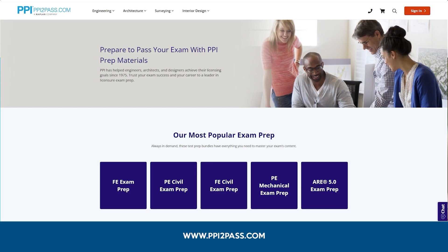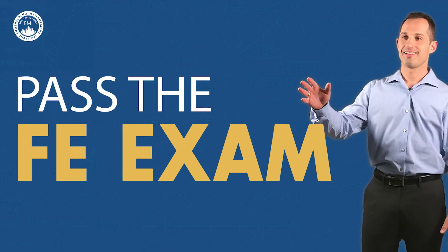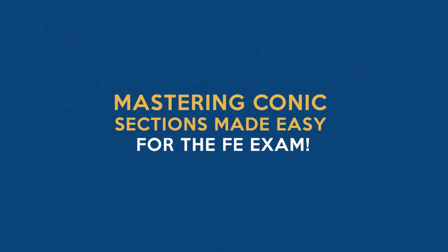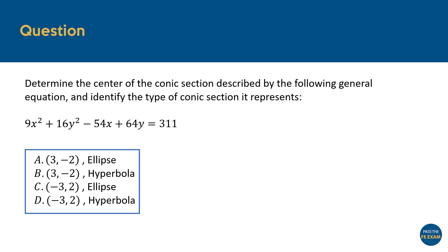Let's dive in. In this question, we are presented with the general equation of a conic section, and our job can be split up into two main objectives. First, we need to determine the center of the conic section, and secondly, we must identify the type of conic section it represents.